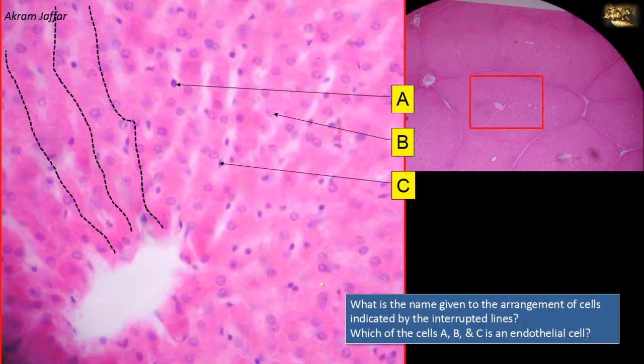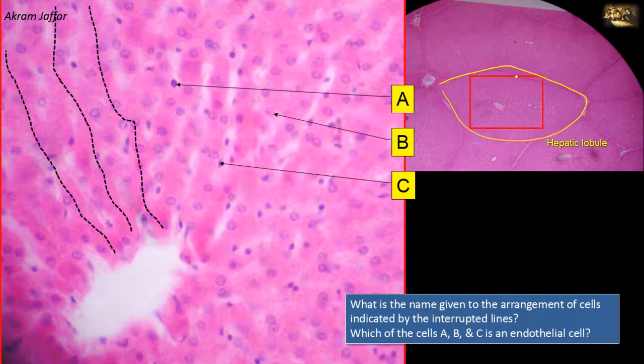What is the name given to the arrangement of cells indicated by the interrupted lines? And which of the cells A, B, and C is an endothelial cell? This section shows part of the classical structural unit of the liver, the hepatic lobule. A hepatic lobule is roughly hexagonal — here is one, and here is another hepatic lobule.